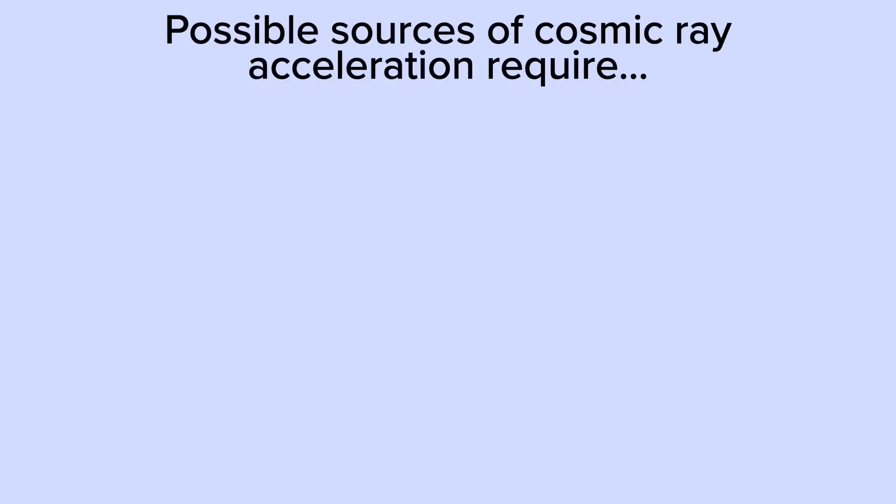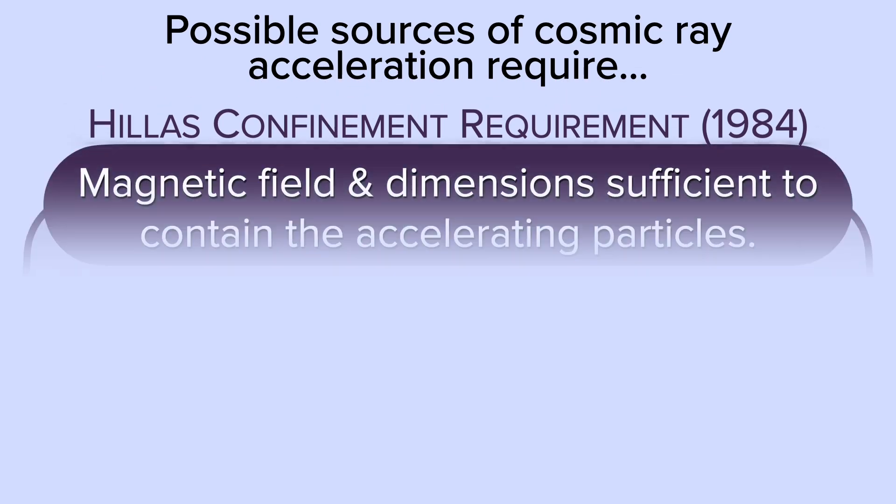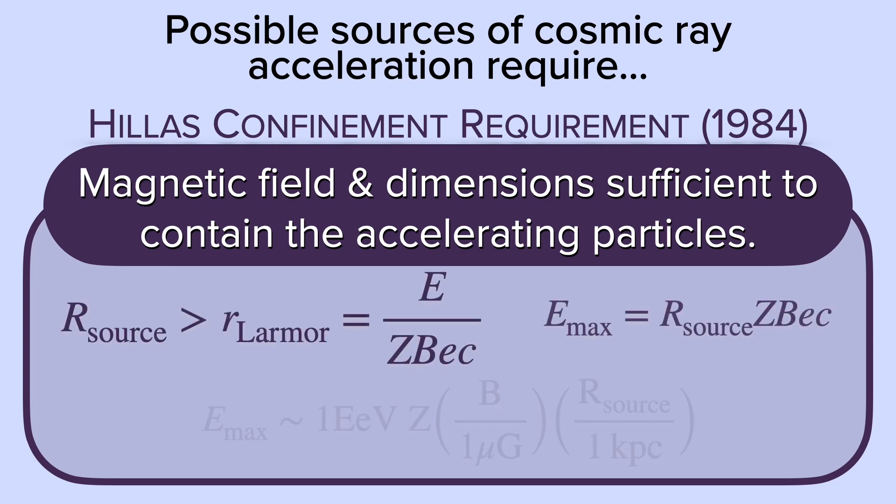Then, we can think of the requirements for possible sources of cosmic ray acceleration, like the Helas confinement, or the magnetic field and dimensions need to be sufficient to contain the accelerating particles. Here, it is defined that the radius of the source needs to exceed the Larmor radius. And so, we can get an expression for the maximum energy our cosmic rays can have, depending on the radius of the source and the magnetic field.